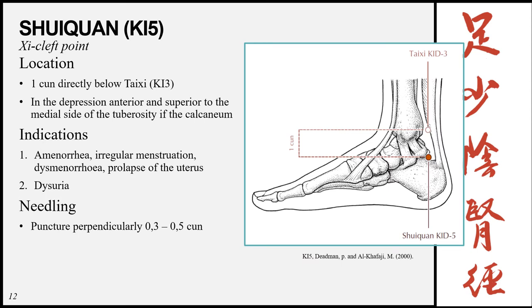Shuiquan, Kidney 5, is the Xi Cleft point of the meridian, located 1 cun directly below Taixi, in the depression anterior and superior to the medial side of the tuberosity of the calcaneum. Palpate along the back of the heel until you feel the tuberosity, then go anterior and superior to it. Remember: Kidney 4 is found by first locating Kidney 3 and Kidney 5, then finding the midpoint and going half a cun posterior. Indications: amenorrhea, irregular menstruation, dysmenorrhea, prolapse of the uterus, and dysuria. Needling: perpendicular 0.3 to 0.5 cun.